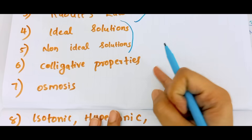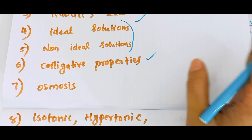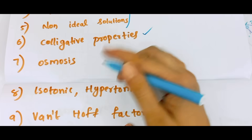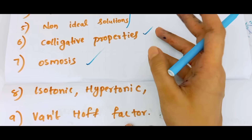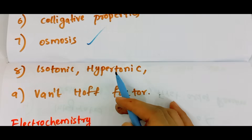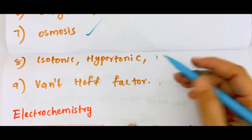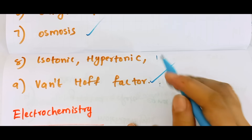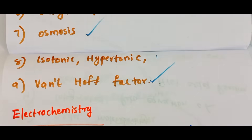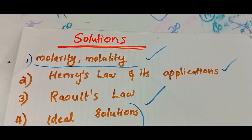What colligative properties? There are 4 colligative properties: Osmosis, Osmotic Pressure, Isotonic, Hypertonic, Hypotonic. The van't Hoff Factor is very important. If you learn one thing about solutions, you will learn the next topic of the chapter.